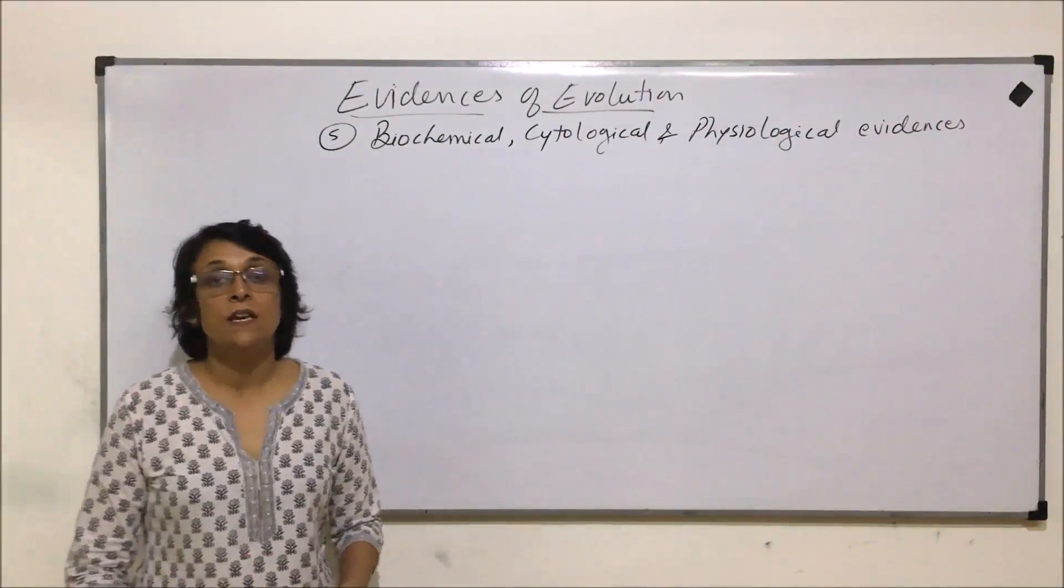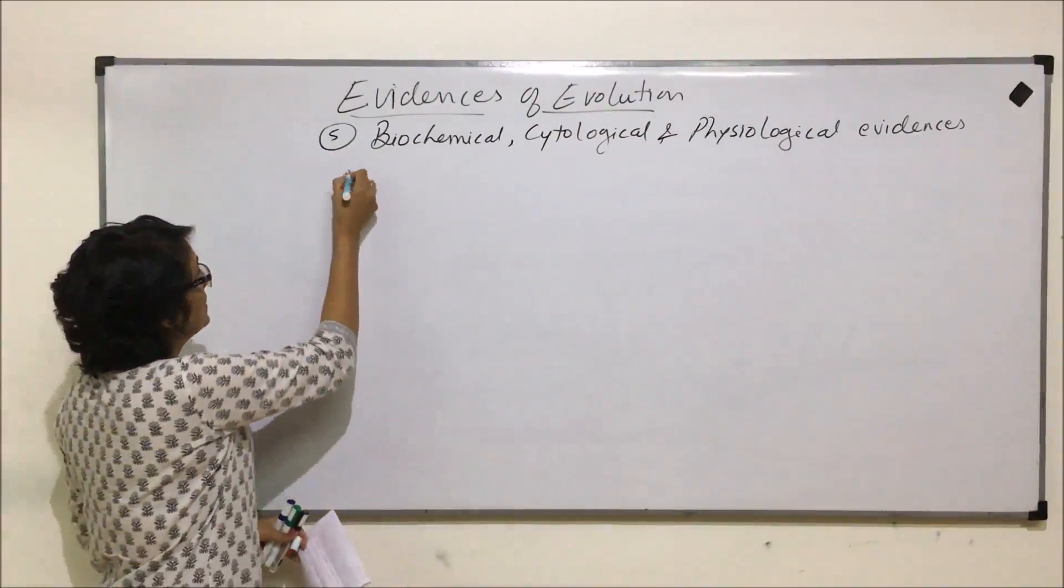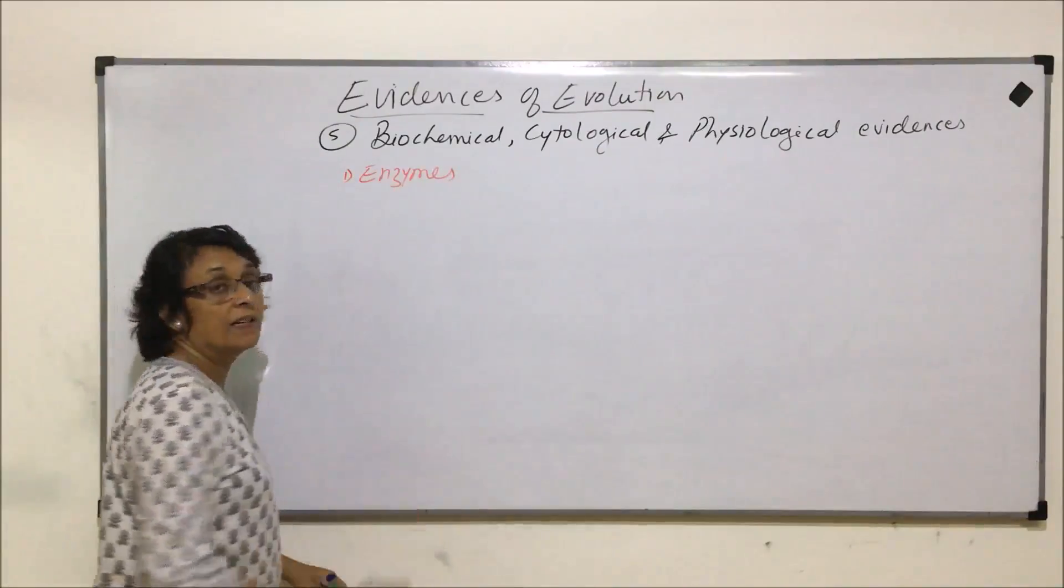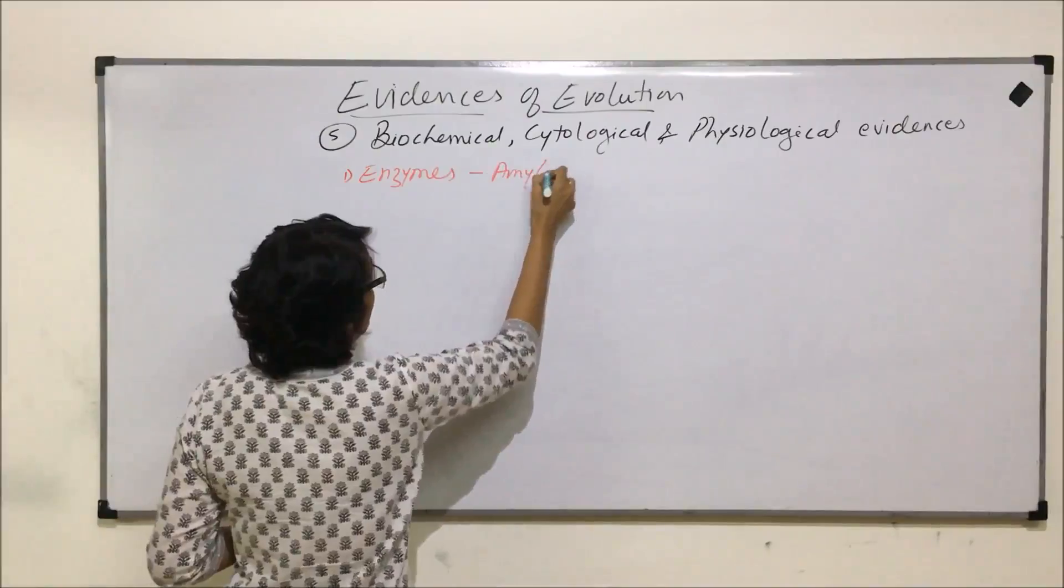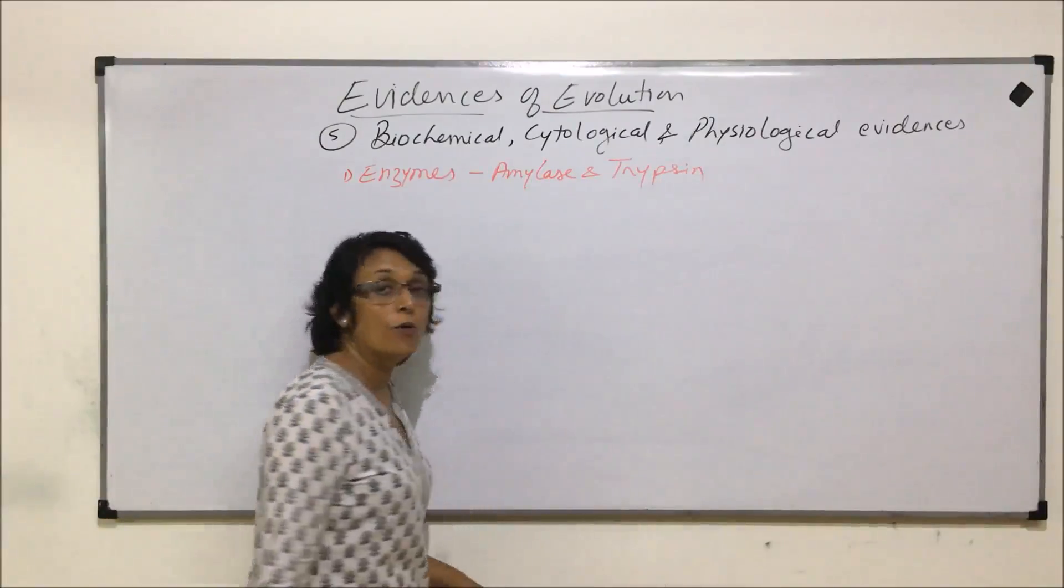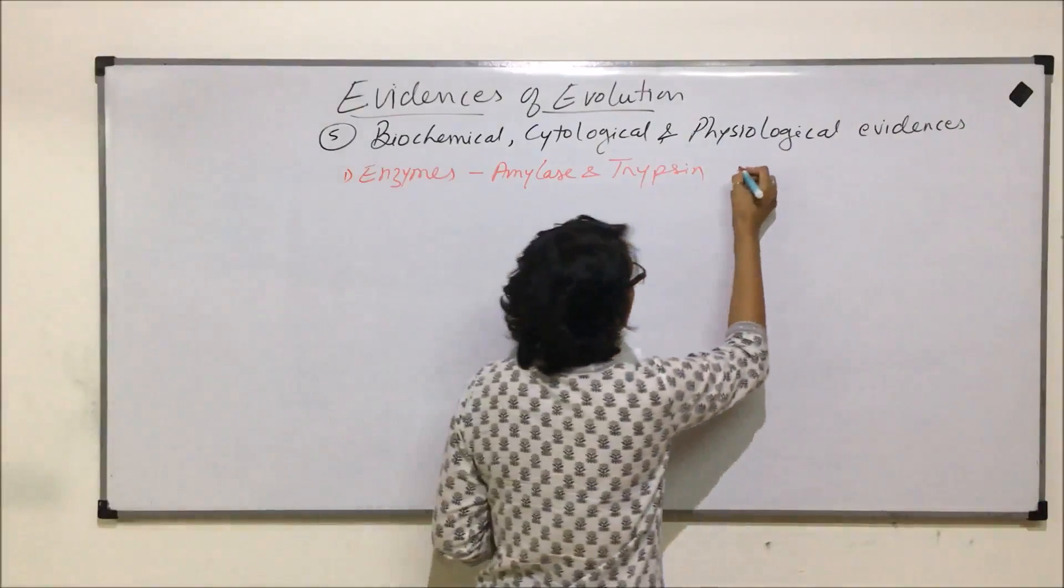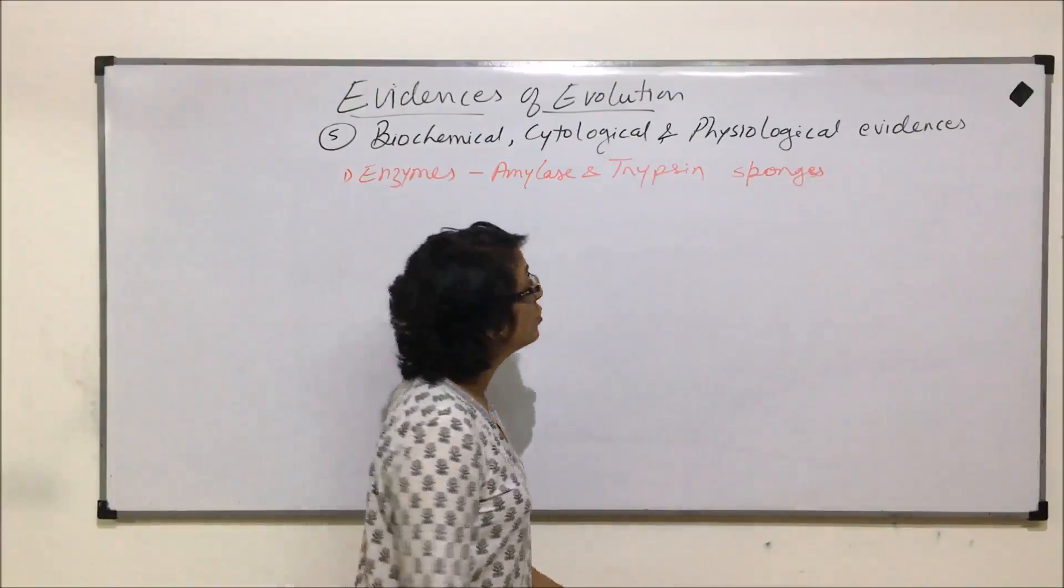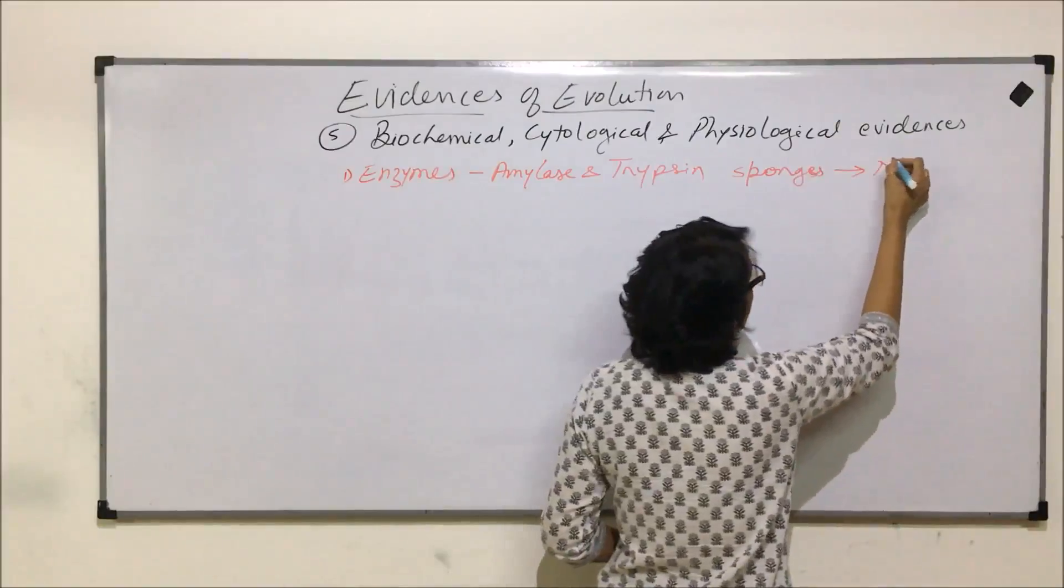Let us take them one by one. Enzymes like amylase and trypsin - amylase and trypsin are found in organisms from sponges to mammals. So in animals from sponges, that is Porifera phylum, to Chordata and the most evolved organisms in chordates, that is mammals.